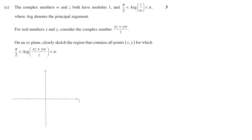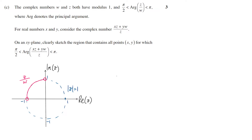So starting from what we know: Z and W both have modulus 1, so they both lie somewhere on the circle of radius 1 centered at the origin. The argument of Z/W is between π/2 and π, which means Z/W must lie somewhere in the second quadrant of the circle. The position of Z/W will be more important than the individual positions of Z or W, and we'll see why. When we take the expression (XZ + YW)/Z and simplify by dividing through by Z, we get X + Y·(W/Z).